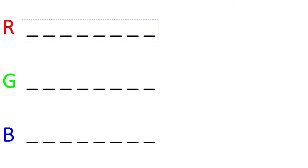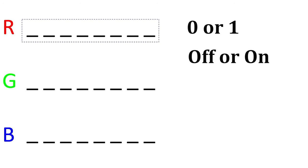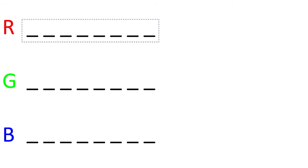Historically, graphics have been displayed using what's either called 8-bit color or sometimes 24-bit color. They both mean the exact same thing. We have three colors per pixel: red, green, and blue. With 8-bit color, each of those colors is represented by 8 bits. Each bit can either be a 0 or a 1 — off or on. Because each color is an 8-bit number, they can range from 0 to 255.